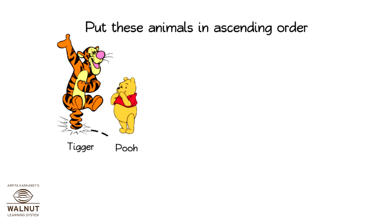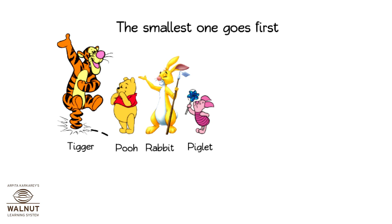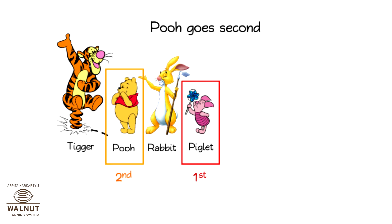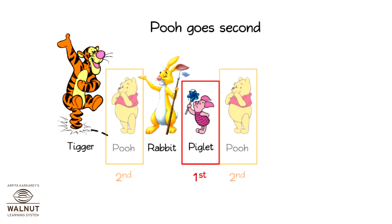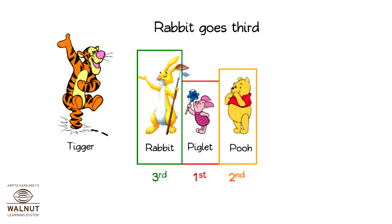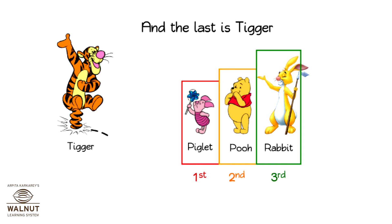Put these animals in ascending order — the smallest one goes first. So Piglet goes first. Who is the shortest of the remaining animals? Pooh. So Pooh goes second. Who is the shortest of the remaining animals? It is Rabbit. So Rabbit goes third. And the last is Tigger.